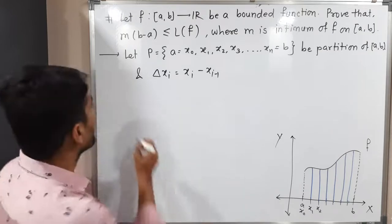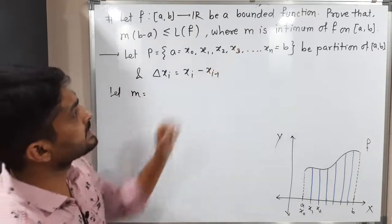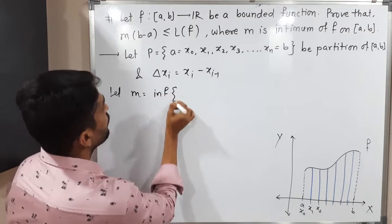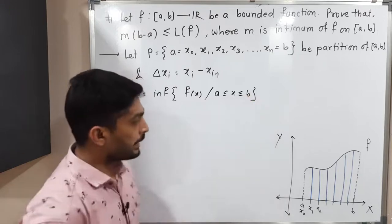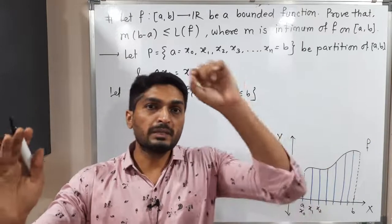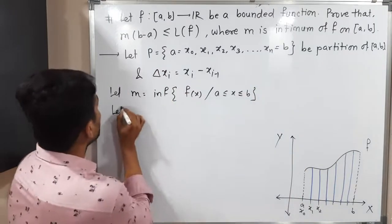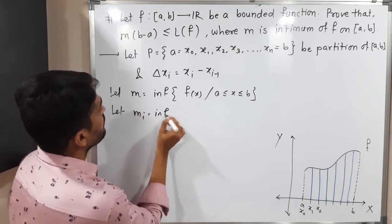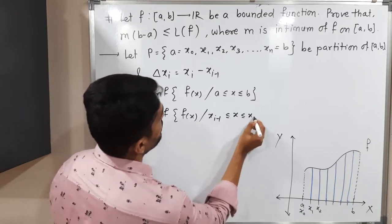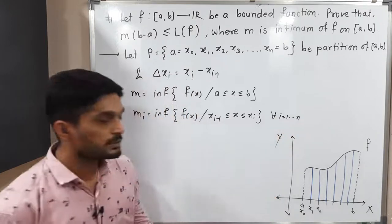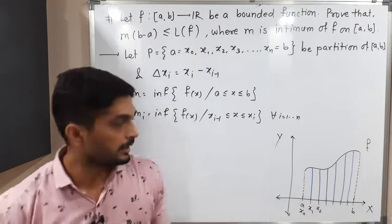We define small m as the infimum of f(x) over the closed interval [a, b], where a ≤ x ≤ b — that is, the minimum value of f over the complete interval. We also define mᵢ as the infimum of f(x) on each sub-interval [xᵢ₋₁, xᵢ] for i = 1 to n, meaning the minimum value of f on each sub-interval.